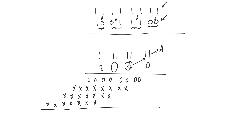Instead of having eight summands, we now have only four, which greatly reduces the number of additions required. On the other hand, there is a hidden complexity: calculating the partial products. I've marked these with X's because multiplying by three is not easy. In normal binary multiplication, each partial product was just an AND gate combining one bit from the multiplier and one from the multiplicand.